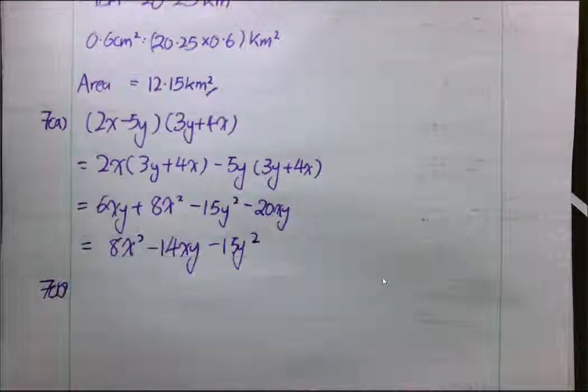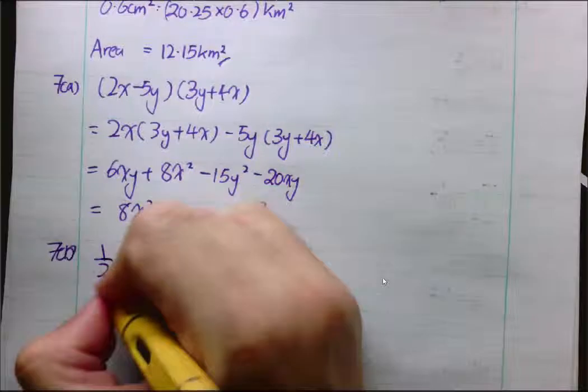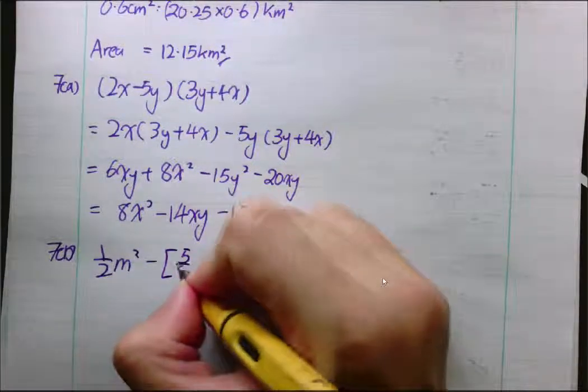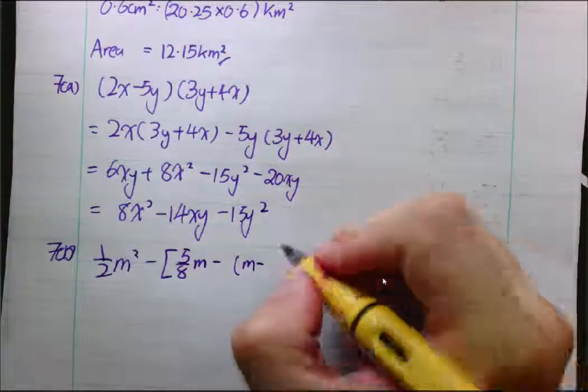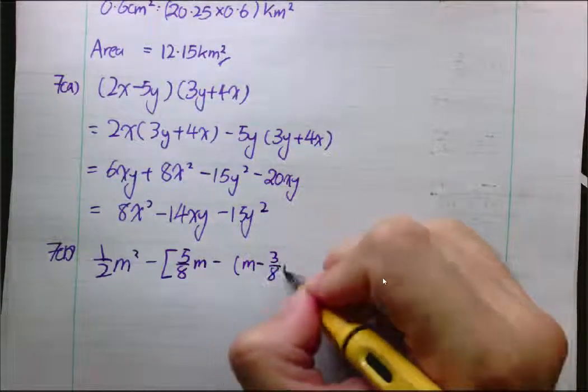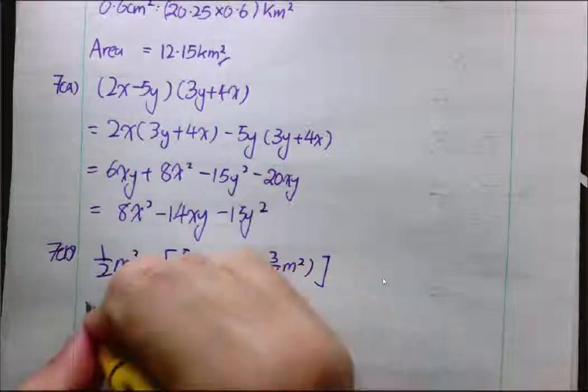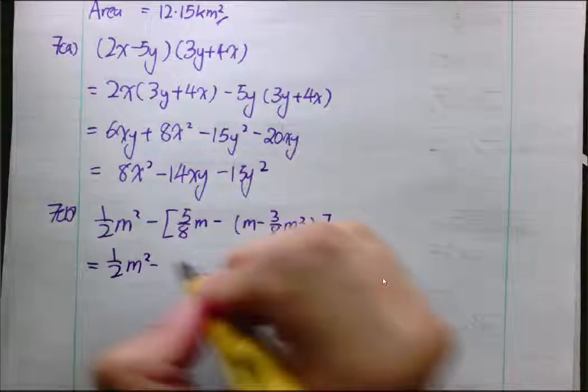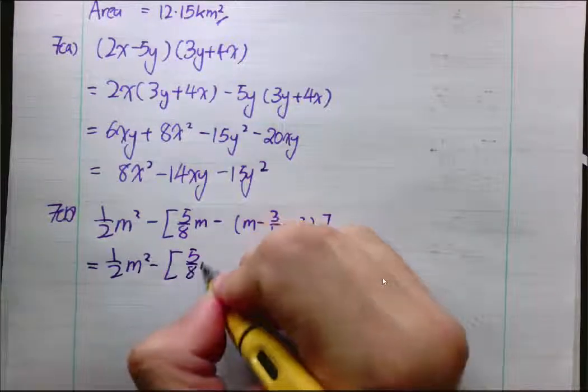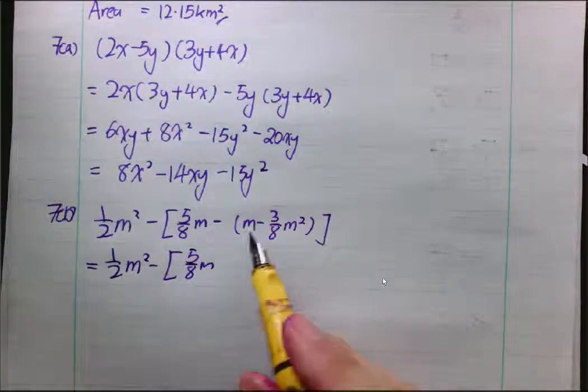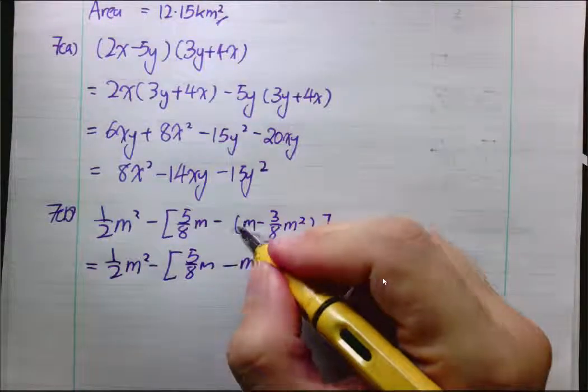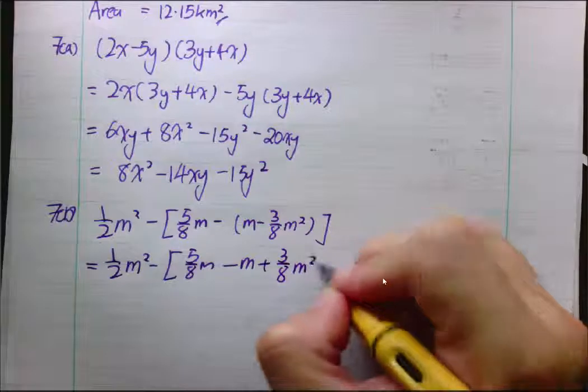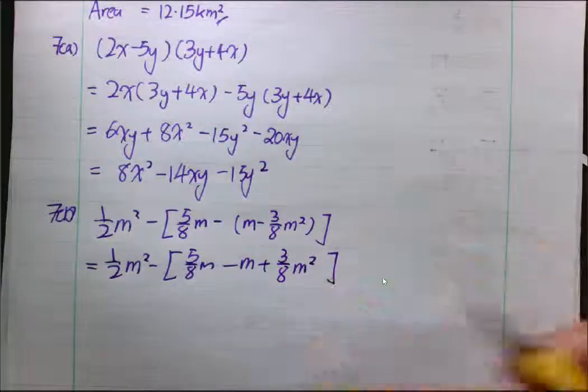7b. 7b, last question. First thing that we do now here is we open up the brackets. So, half m² minus 5 over 8m. Negative 1 times m gives me negative m. Negative negative gives me positive 3 over 8m².